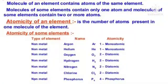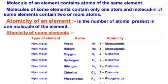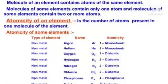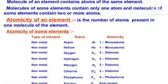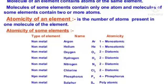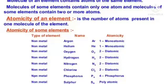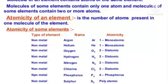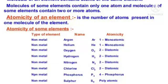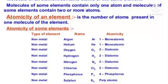Atomicity of an element is the number of atoms present in one molecule of the element. Observe the atomicity of some elements.